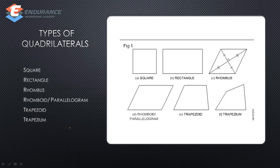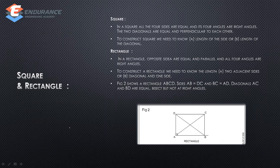The types of quadrilateral are: square, rectangle, rhombus, rhomboid, parallelogram, trapezoid, and trapezium. First, square: a square has all four sides equal, all four angles are right angles, and the two diagonals are equal and perpendicular to each other. To construct a square, we will need either the side length or the diagonal length.